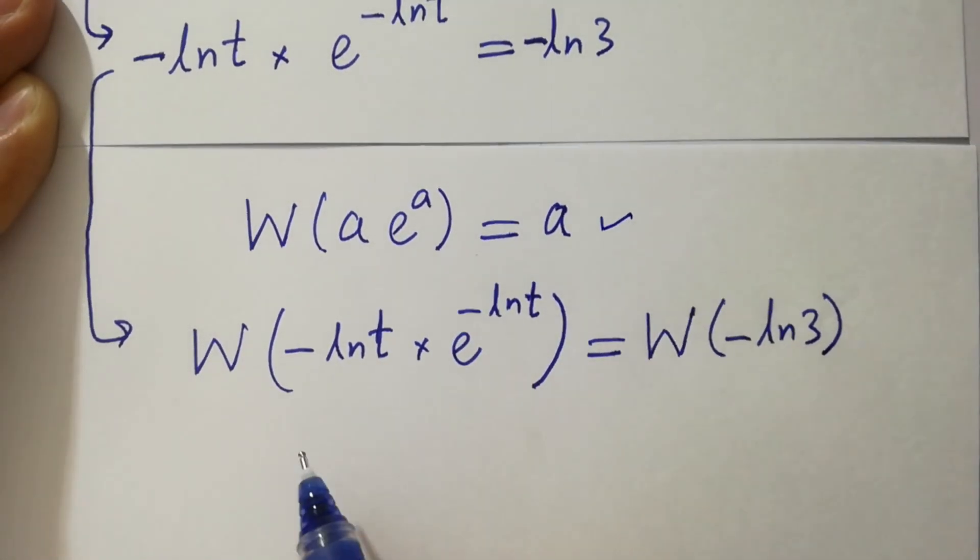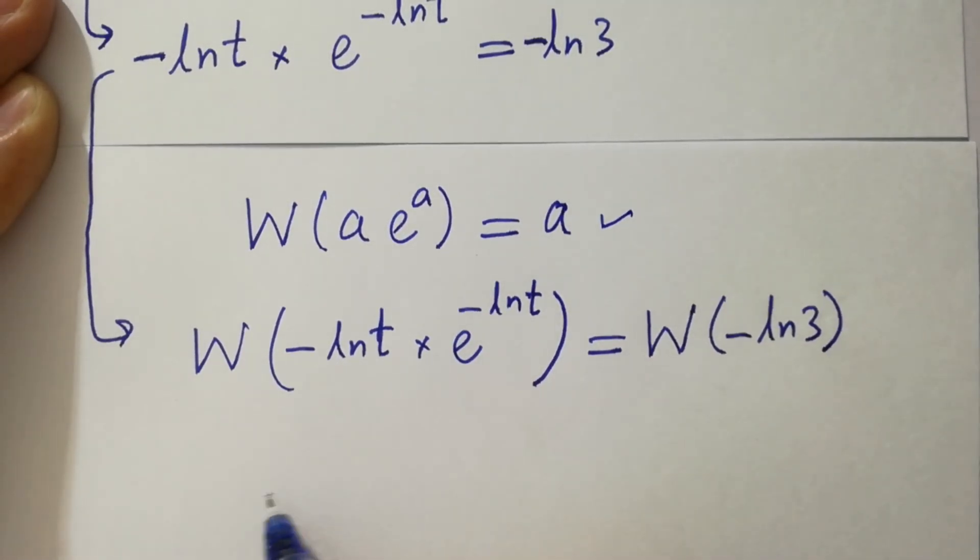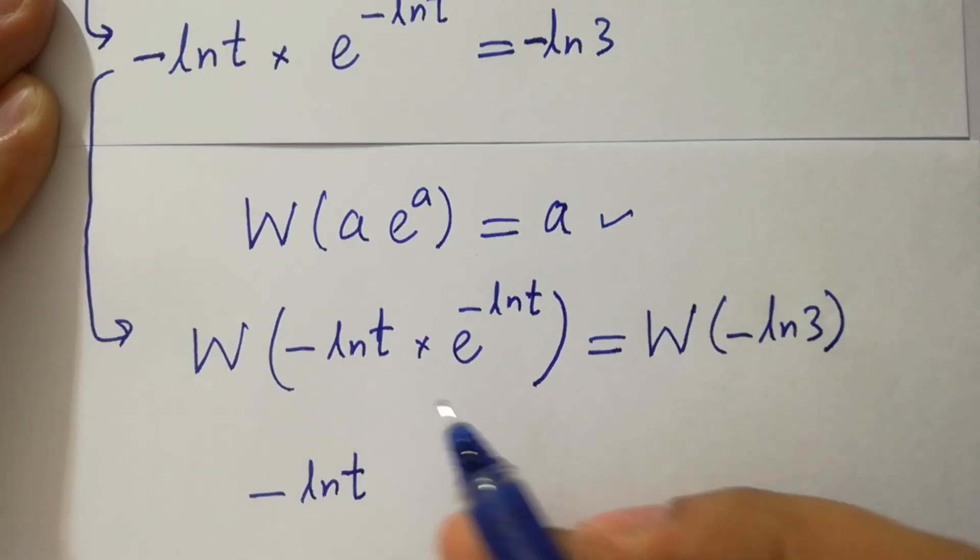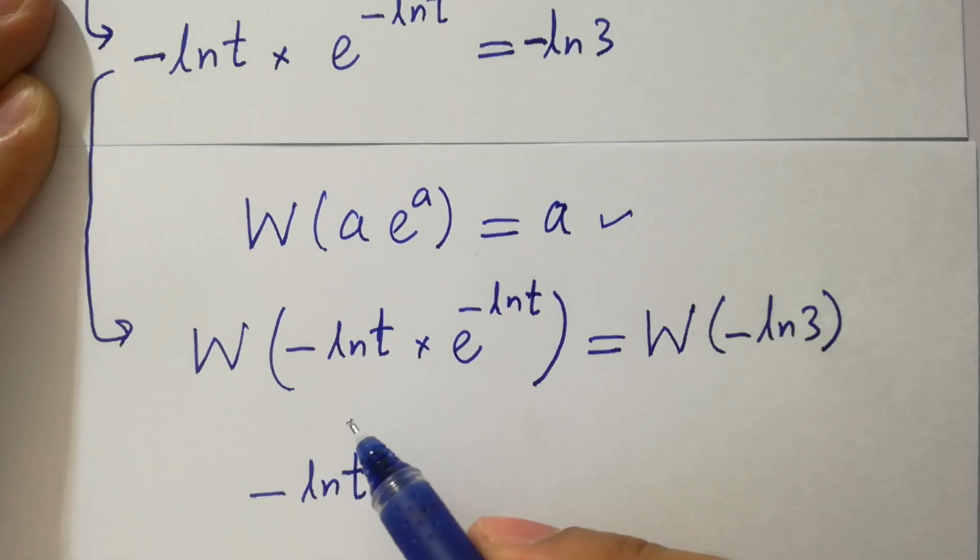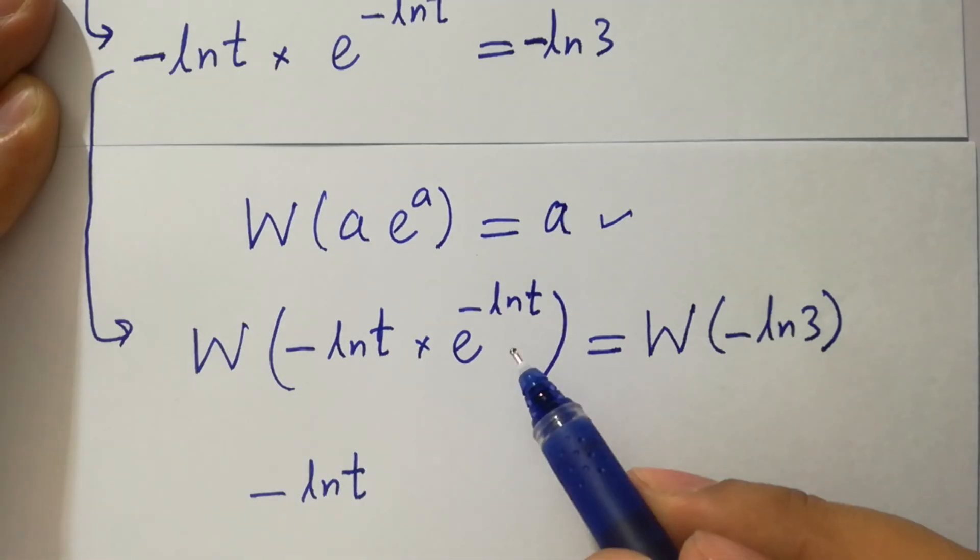Here according to that we have here minus ln t. Since w a times e to the power a equal to a. So here w minus ln t times e to the power minus ln t will be equal to minus ln t.